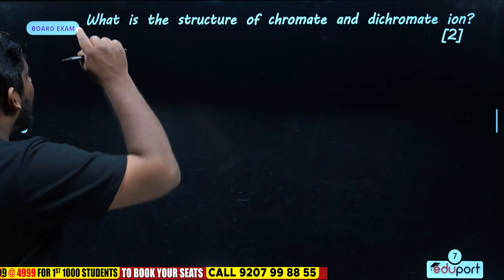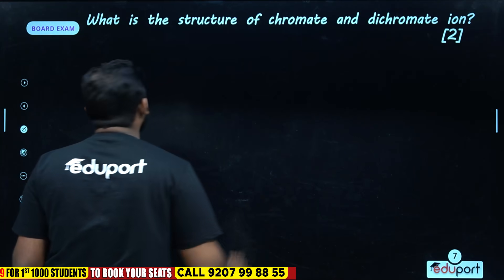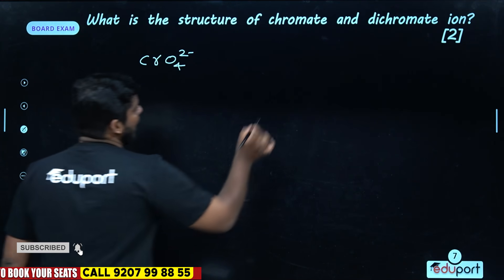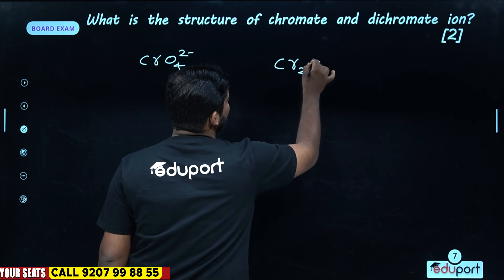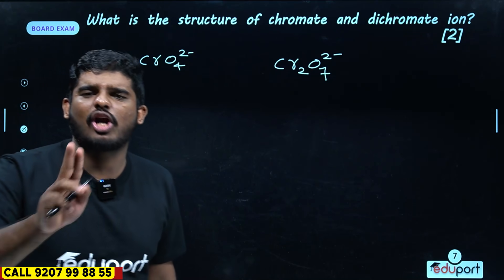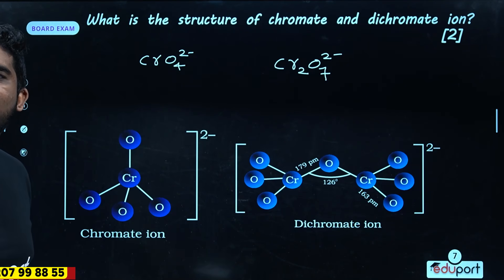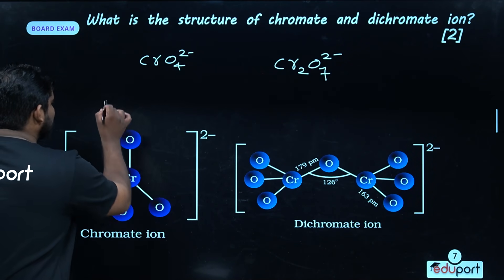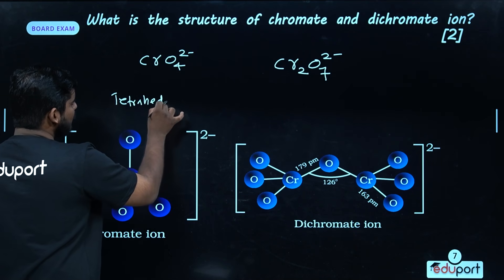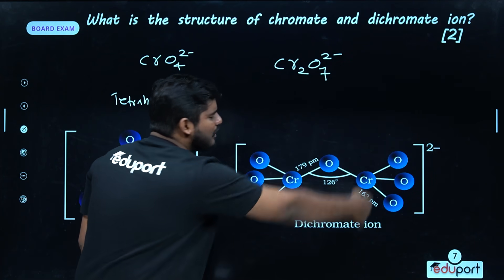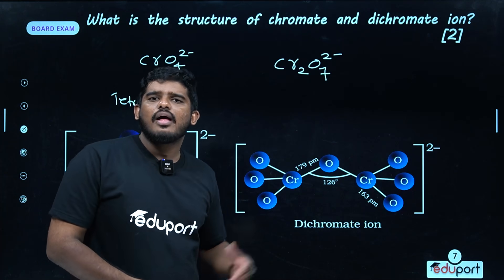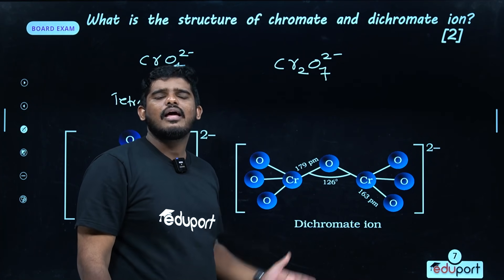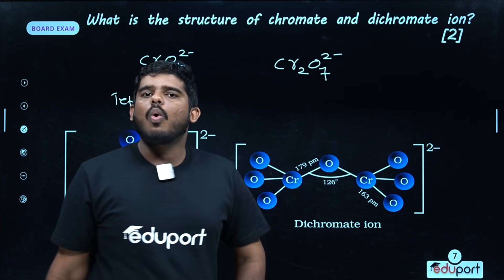What is the structure of chromate and dichromate? Chromate is CrO4 2-, which has a tetrahedral structure. Dichromate (Cr2O7 2-) is a bridged tetrahedral structure. The terminal bond length is 163 pm, the bridging bond length is 179 pm, and the bond angle is 126 degrees.